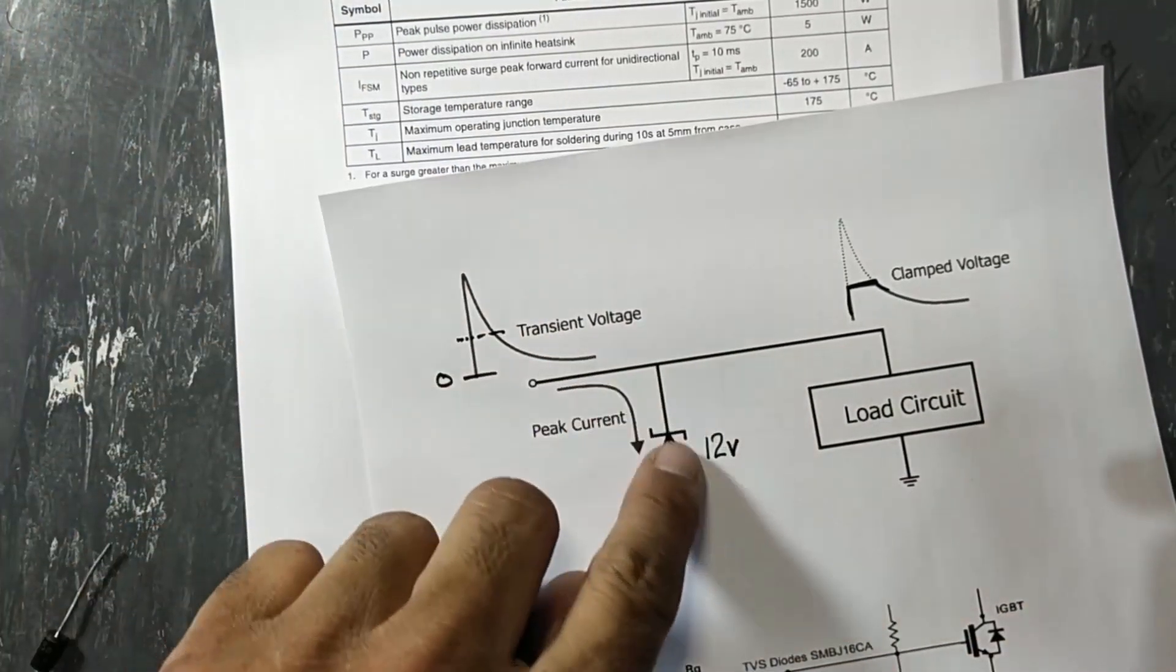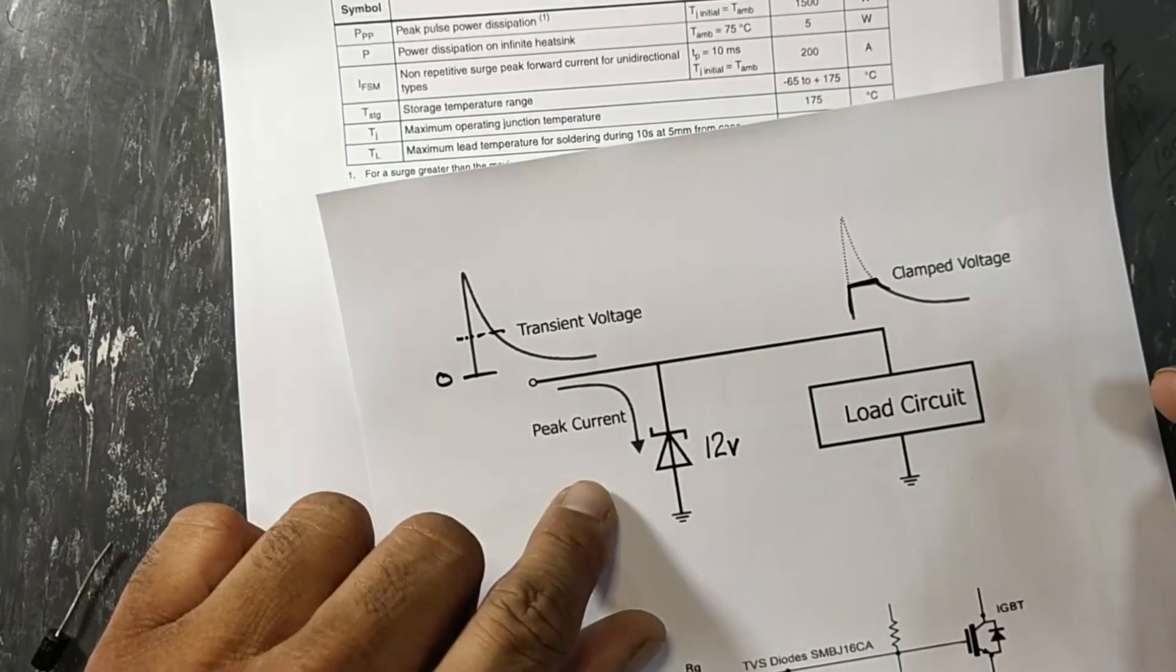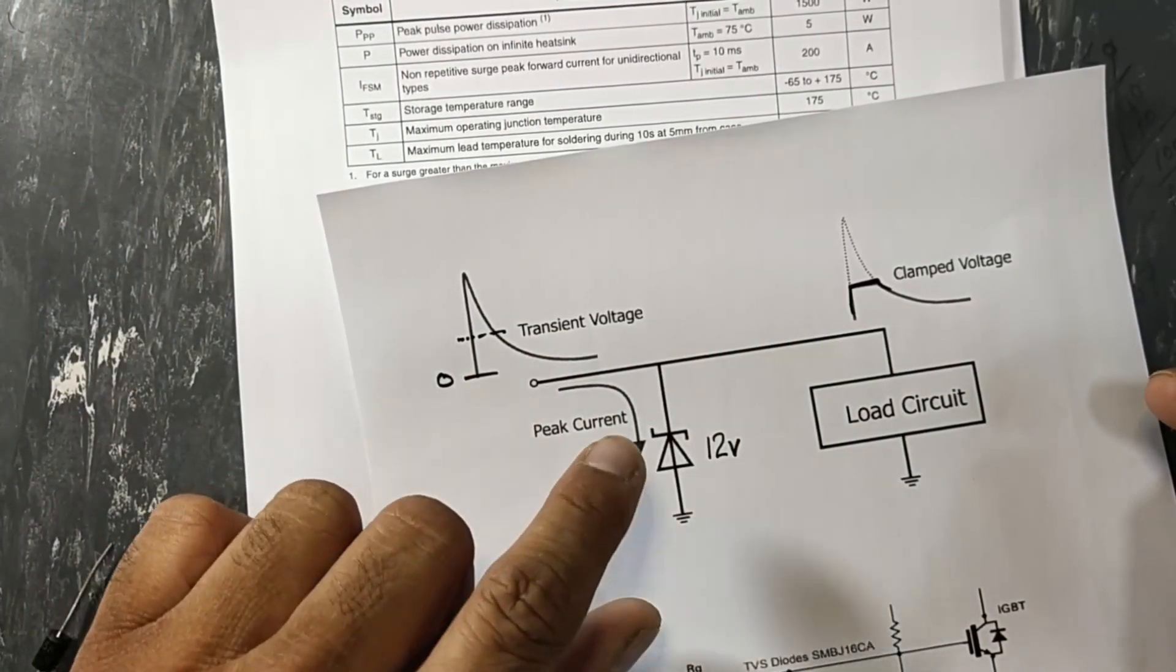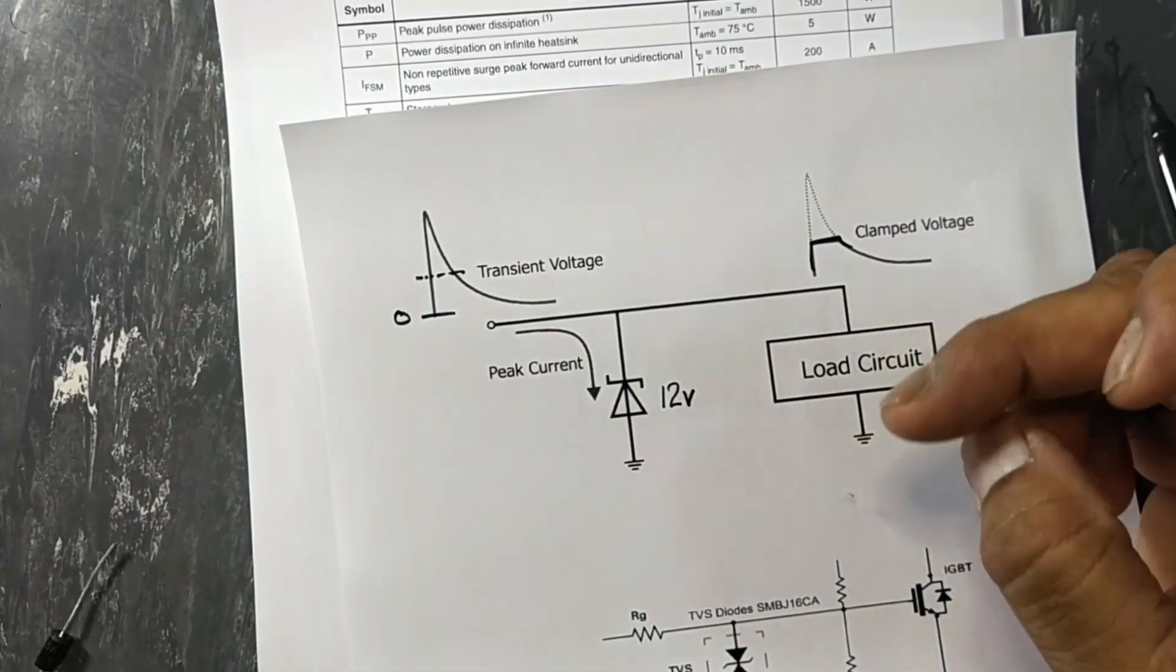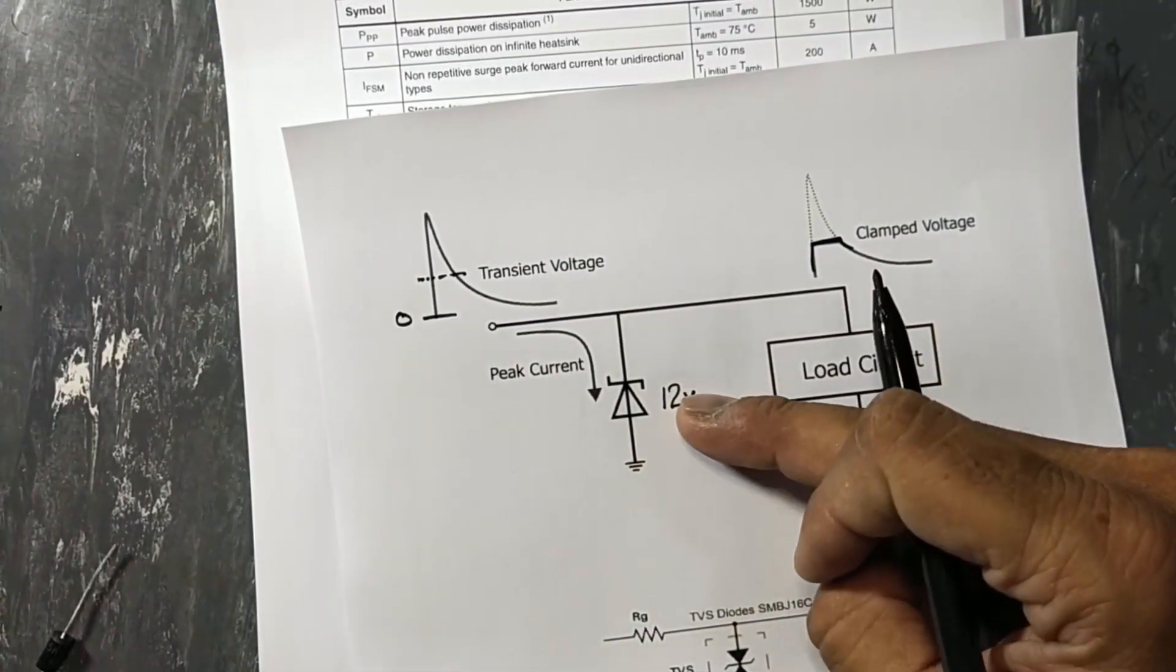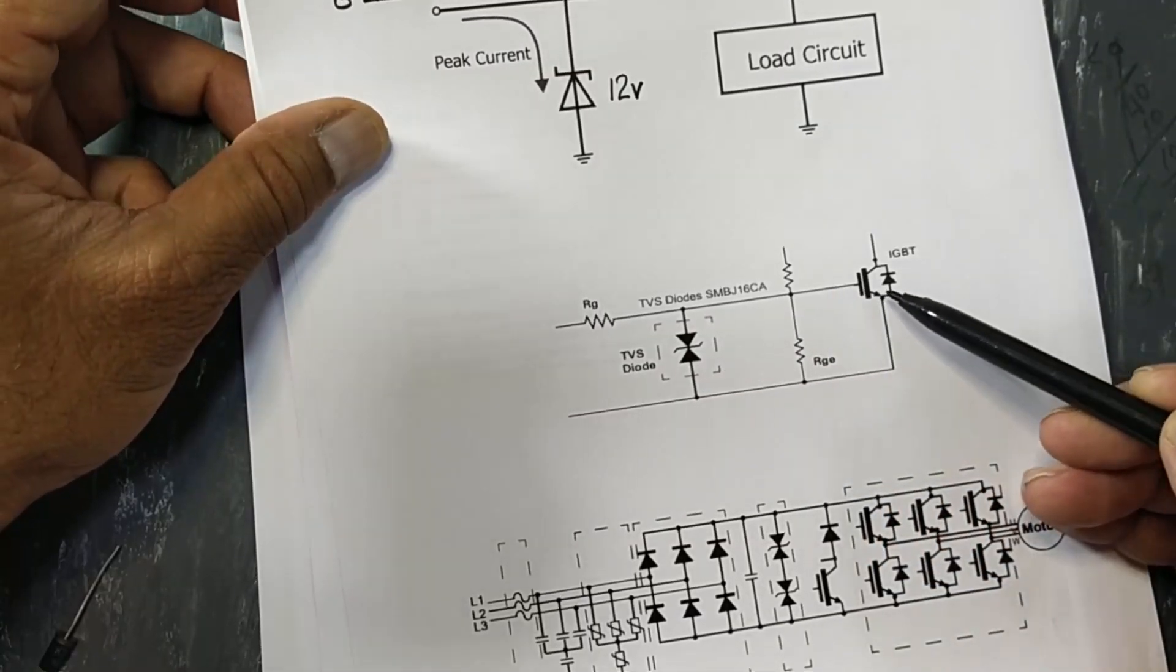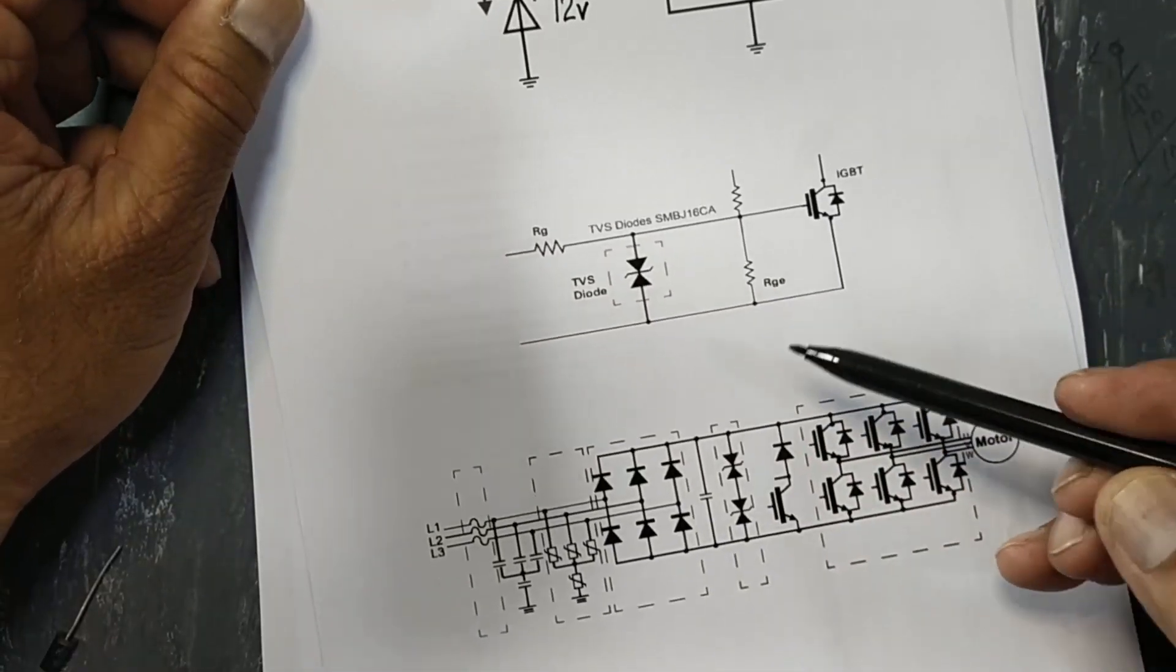And the upper voltage will be grounded. We can say it has similar to zener function, but it is a protection. Its junction is much wider compared to zener. Most of the time it is used for protection for IGBTs and VFDs for DC rails.